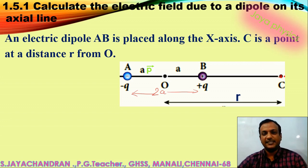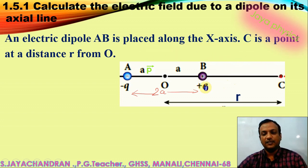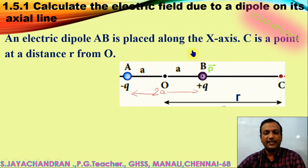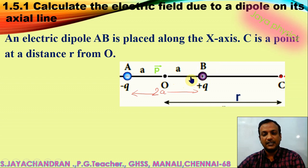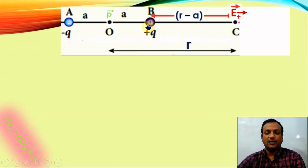In the dipole, the dipole moment always acts from negative charge to positive charge. This is important — the dipole moment acts from minus q to plus q. Now I am going to find out the electric field at point C.